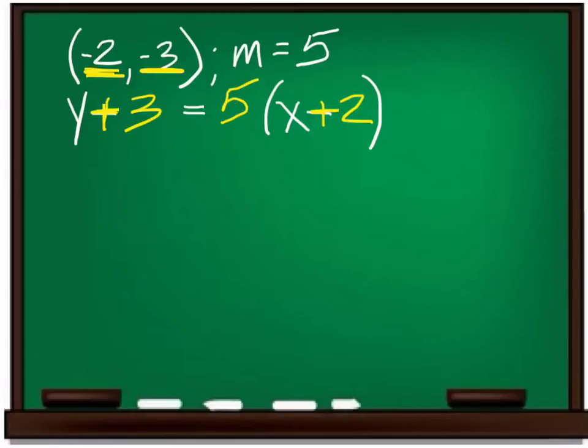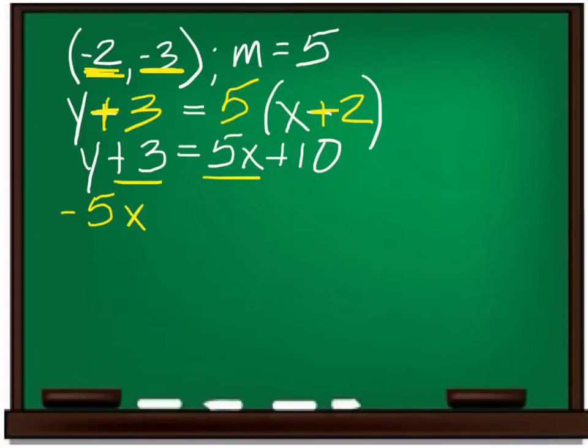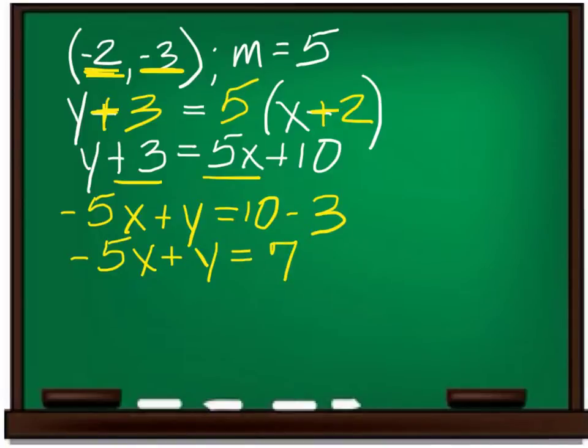So multiply through by the 5 to get 5x plus 10. You have to move the 5x and the 3. So that's negative 5x plus y equals 10 minus 3. And I think I have room to simplify that at this point to get a 7. The only thing wrong with this standard form is that it has a negative sign on the front. So change the sign of everything. 5x minus y equals negative 7.